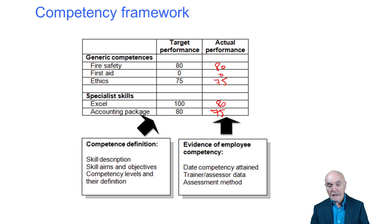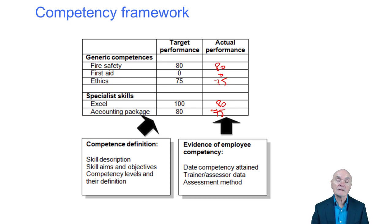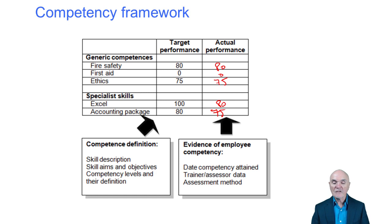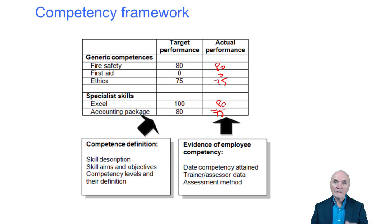If improvement is urgent, they may set a deadline for improving your actual performance. Later on, perhaps in three months when they review it again, we hope you've moved toward the target performance. It's not complicated — it's simply specifying the competences, identifying where you are now and where you need to be, and providing some mechanism for closing those gaps.